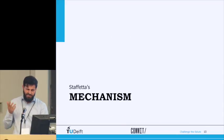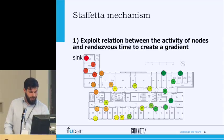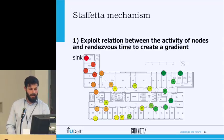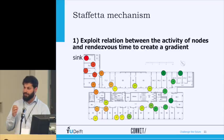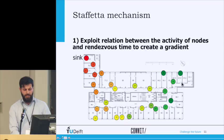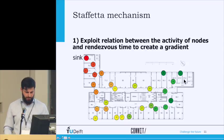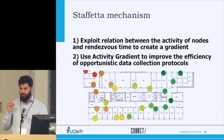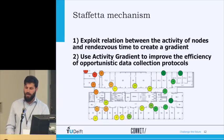Now let's go deeper into the mechanism. Stafetta is based on a two-step approach. The first step exploits the relation between node activity and rendezvous time to create a gradient where nodes close to the sink are the most active. The sink node is in red, and the activity of nodes decreases as you go farther from the sink. Once this gradient is created, we exploit it to improve the efficiency of opportunistic data collection.